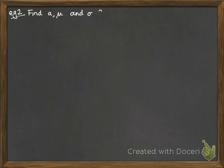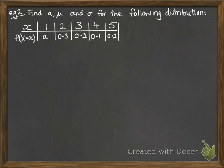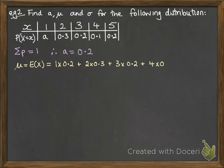Okay, second example. We've got this probability distribution table, and we're asked to find a, mu, and sigma. So first off, a, nice and easy. All of those probabilities have to add up to 1, so a has to be 0.2. Mu is the same as e of x. So that's each of our x values times by their probability and added together.